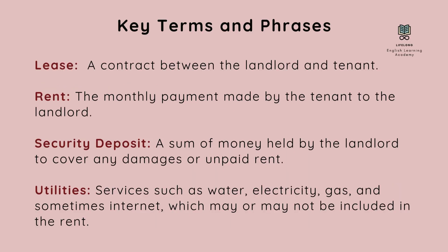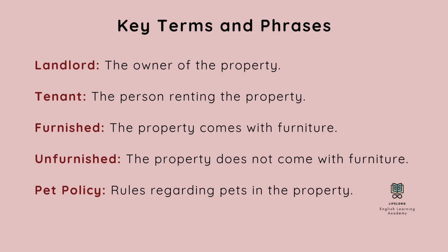Let's get familiar with some key terms and phrases. Lease: a contract between the landlord and tenant. Rent: the monthly payment made by the tenant to the landlord. Security deposit: a sum of money held by the landlord to cover any damages or unpaid rent. Utilities: services such as water, electricity, gas, and sometimes internet, which may or may not be included in the rent. Landlord: the owner of the property. Tenant: the person renting the property.